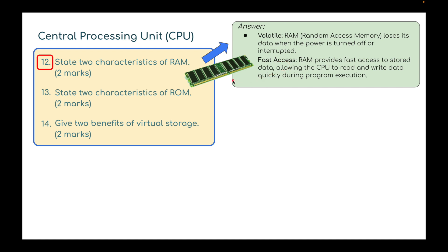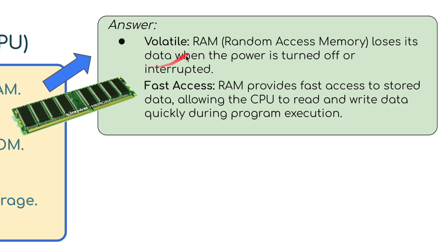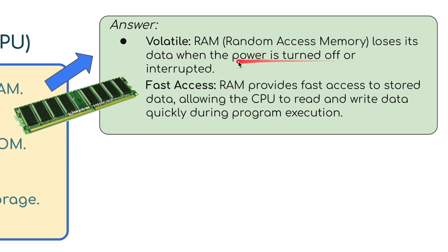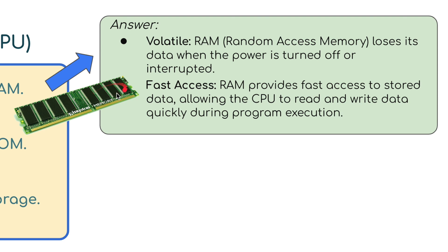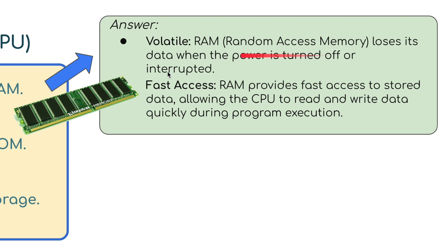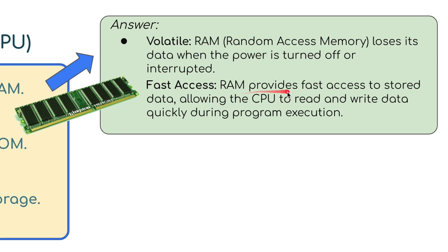Question 12: state two characteristics of RAM. Here is a RAM chip. The RAM memory is volatile - it loses its data when the power is turned off or is interrupted, so it's temporary. It's using the memory on the RAM chip to carry out a specific instruction. Once the computer is turned off, this is emptied. Fast access: RAM provides fast access to stored data, allowing the CPU to read and write data quickly during program execution.